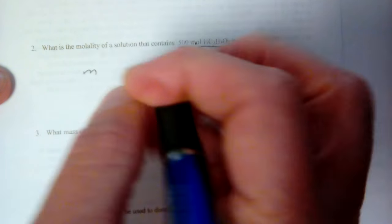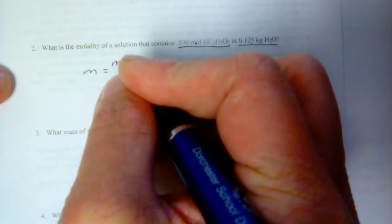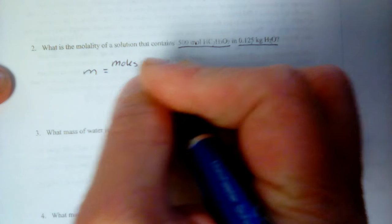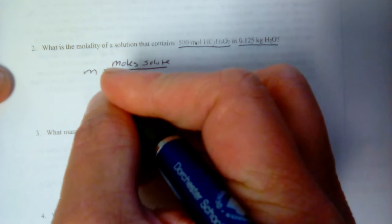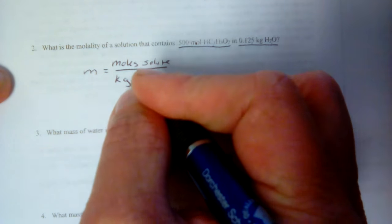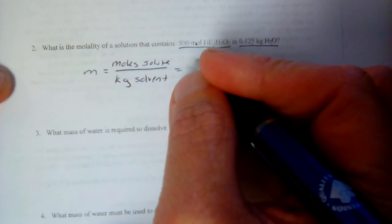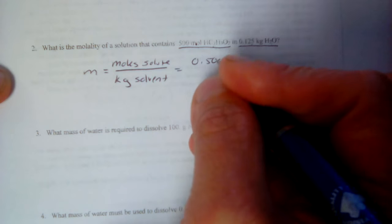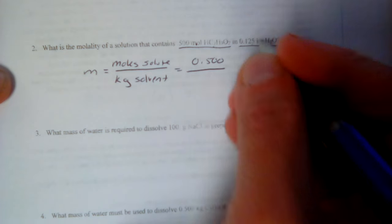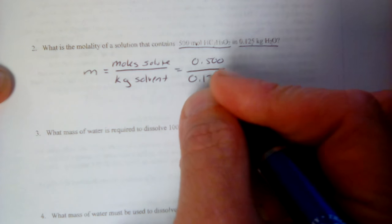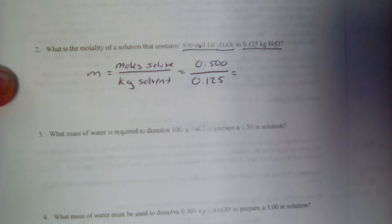So all I've got to do in this one is substitute and solve. So molality, lowercase m, moles of solute over kilograms of solvents. So moles go on top, 0.500 moles. Kilograms go on the bottom, 0.125 kilograms. Divide them out, 0.5 divided by 0.125 is 4.